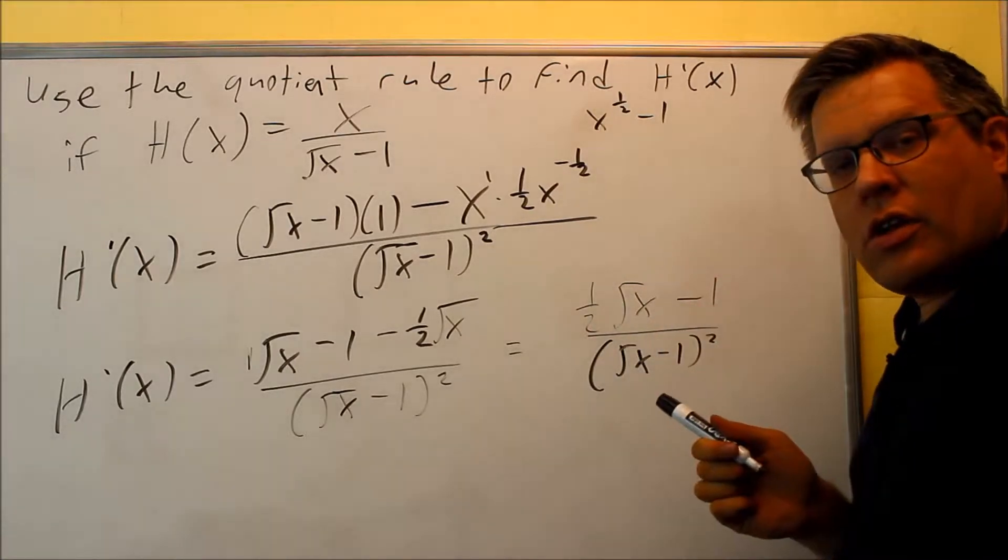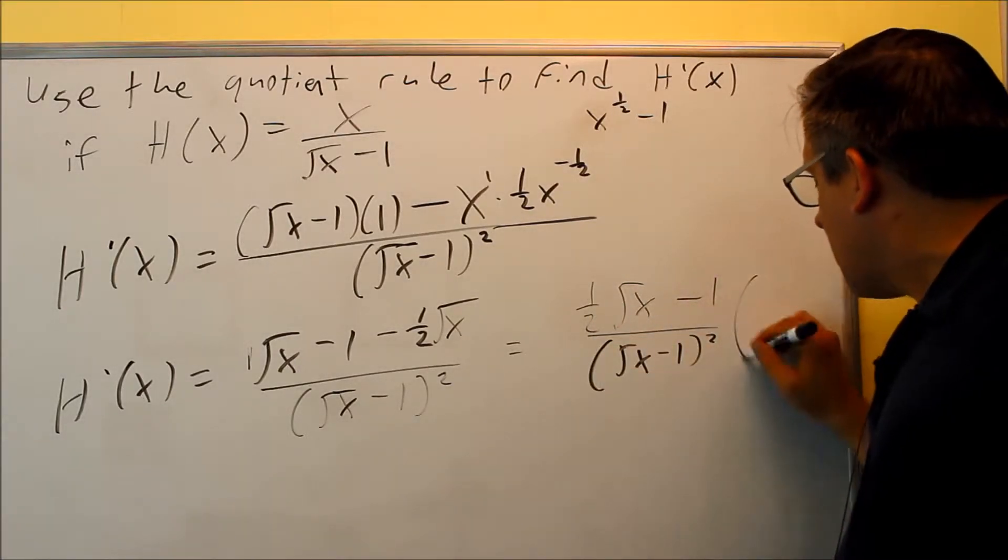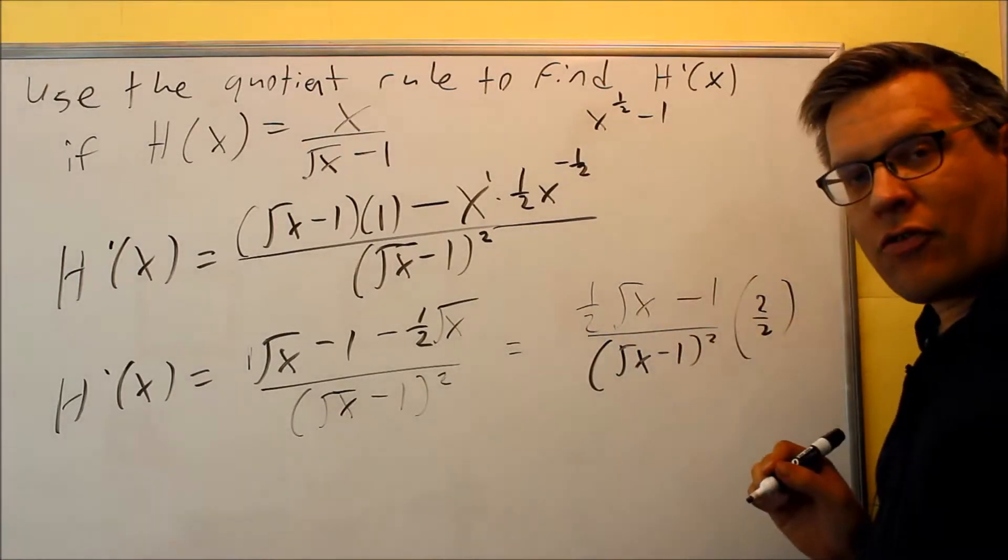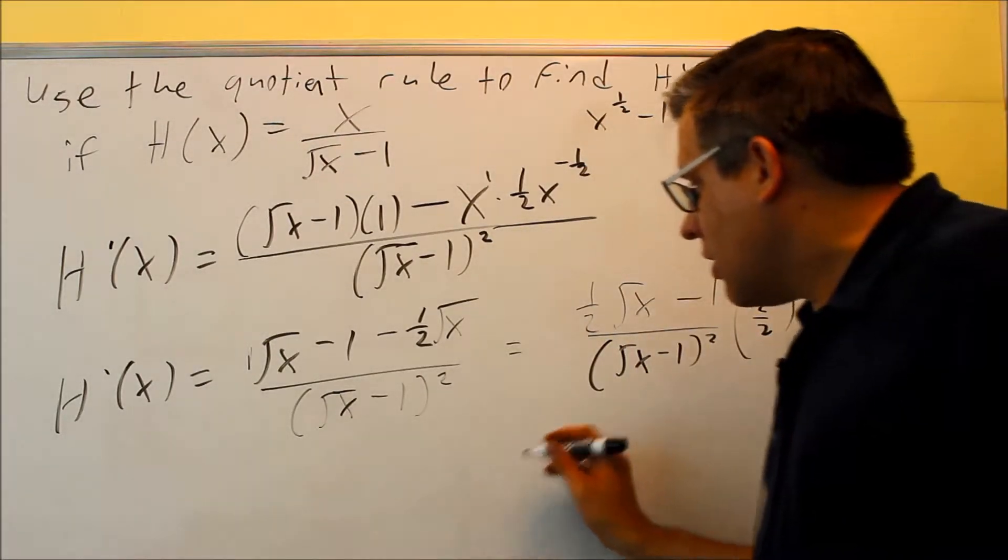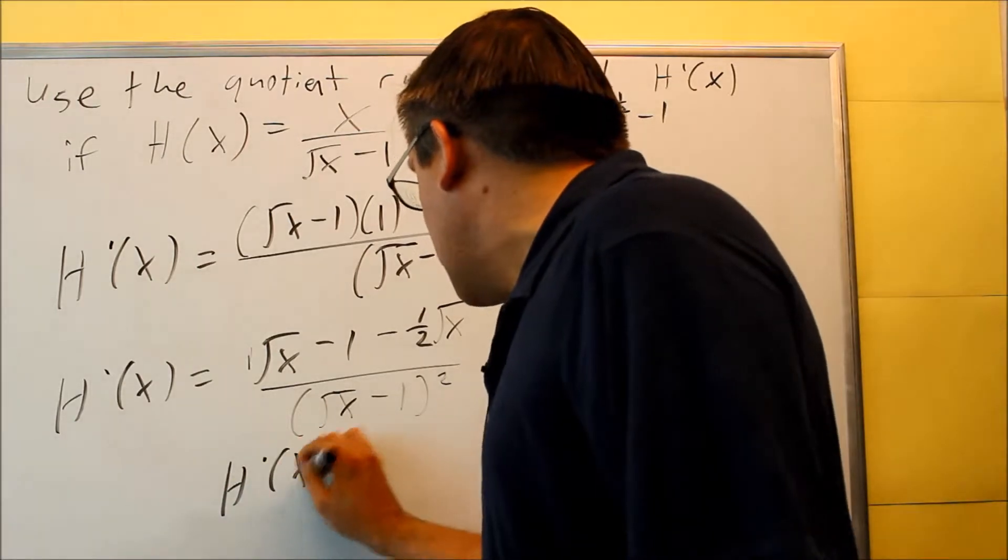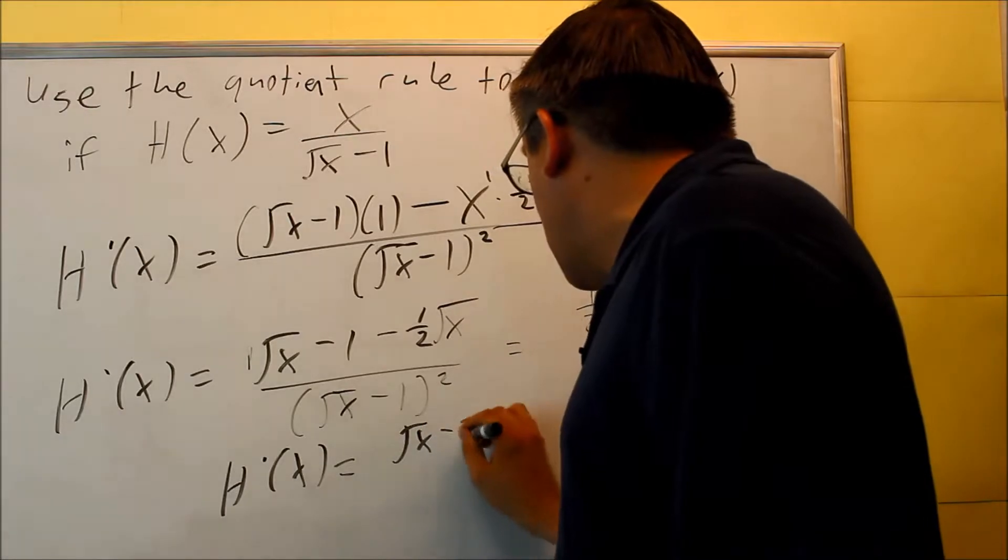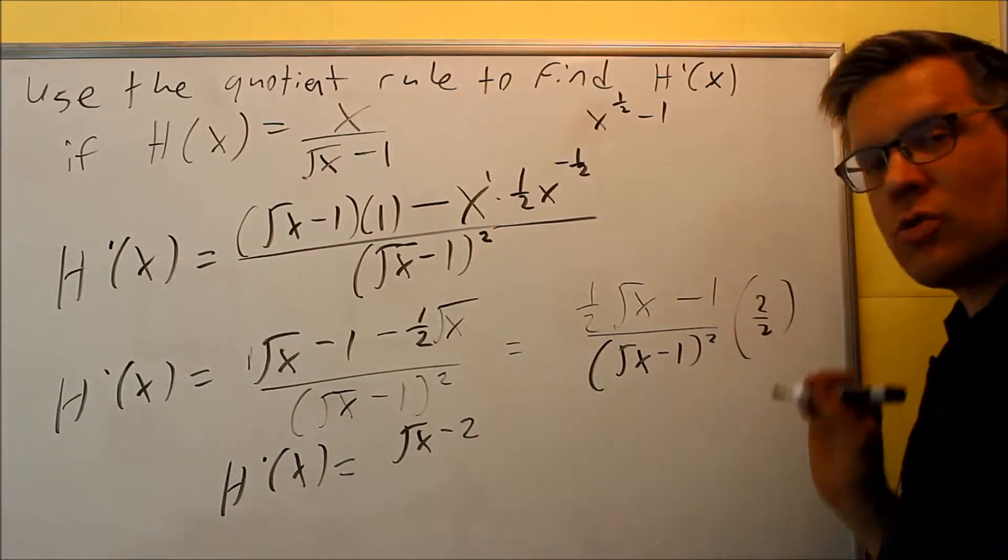And then, in order to get rid of the double fractions here, what I'll do is I'm going to multiply the top and bottom by 2. That way, I can clear out the fraction. I don't need to worry about that. So here would be my final answer. My derivative is going to be 2 times this will be square root of x minus 2. Don't forget to multiply this one also.